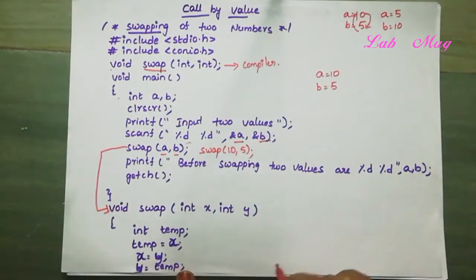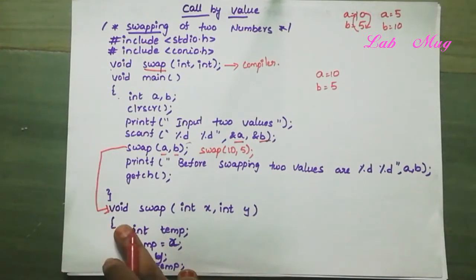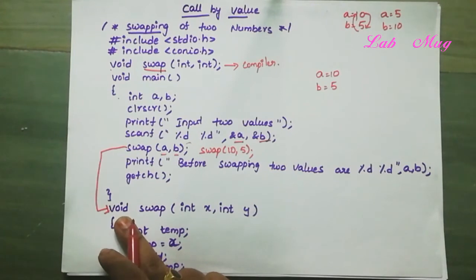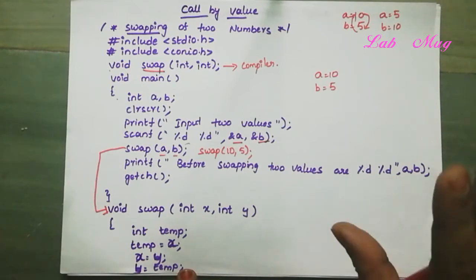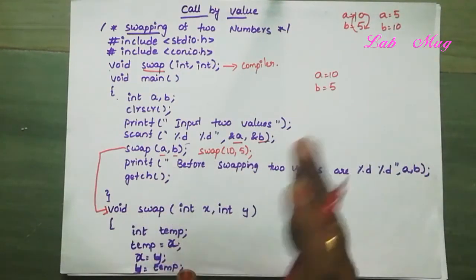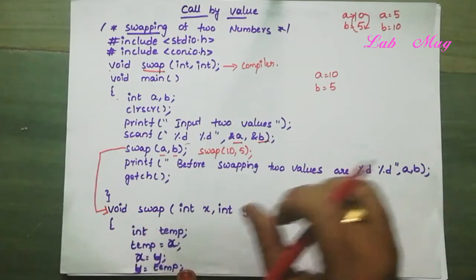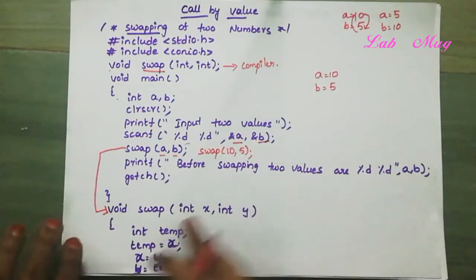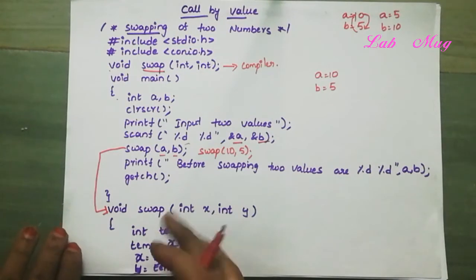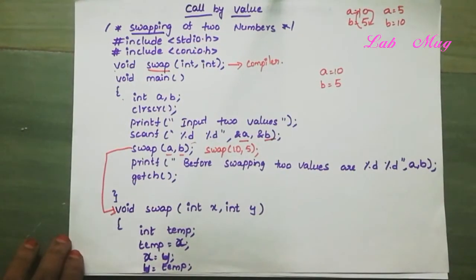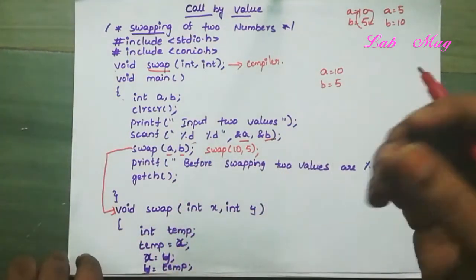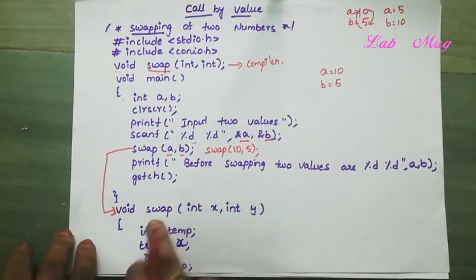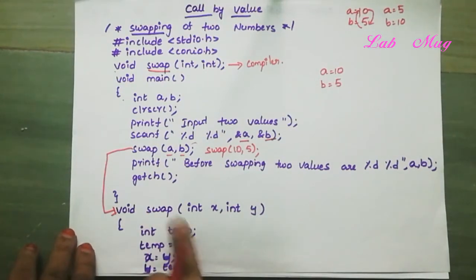The function declaration statement: first we check the return type. We have two types of functions by return type — void functions and non-void functions. Void means we do not expect a return value from the function. The swap function here is a void function.